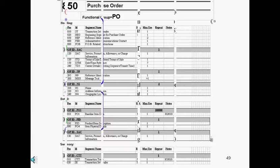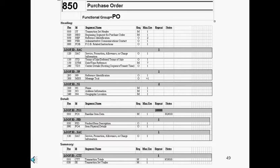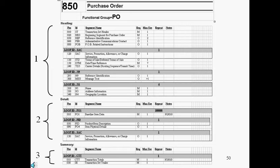Let us take a closer look at transaction sets. A transaction set is basically the document itself. It is made up of data segments, and these data segments are sectioned into areas or tables. The heading is area 1 or table 1. The detail is area 2 or table 2. The summary is area 3 or table 3. Not all transaction sets have all three areas — in fact, many do not have the summary section.